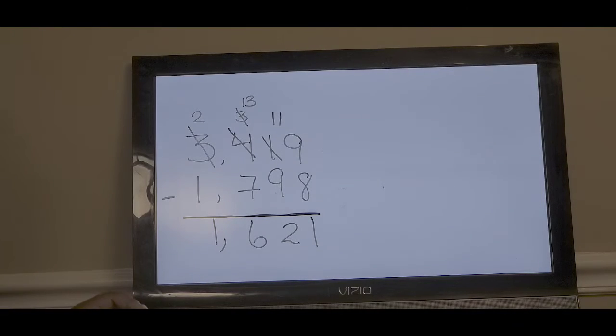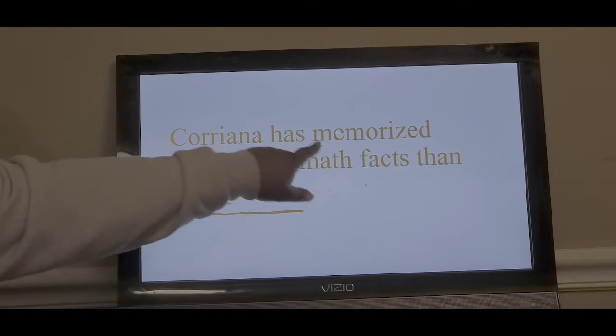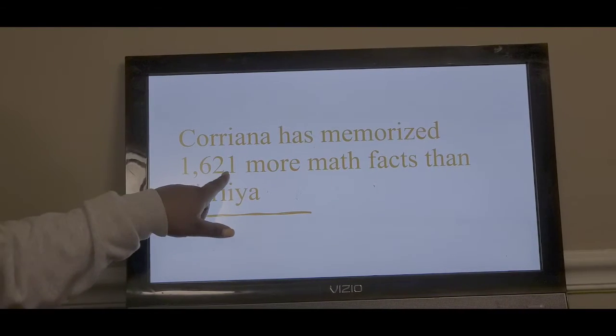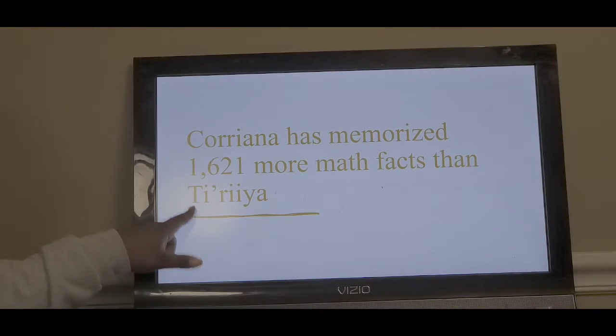Our total amount is 1,621 math facts. Corianna has memorized 1,621 more math facts than Taraya.